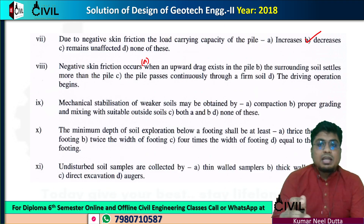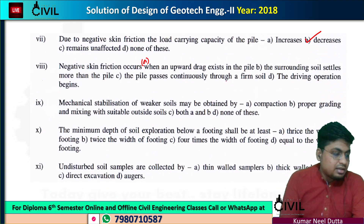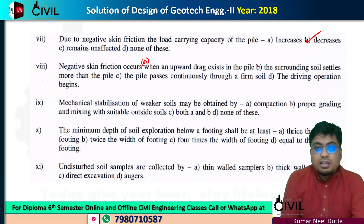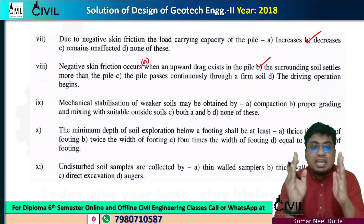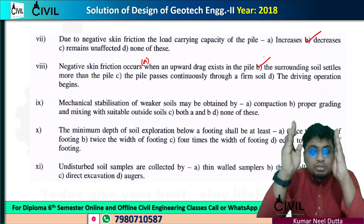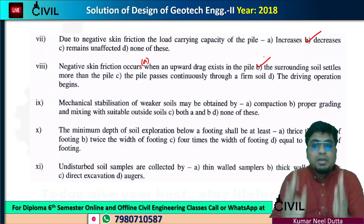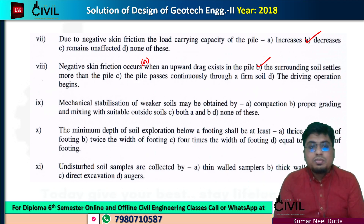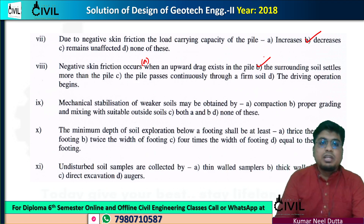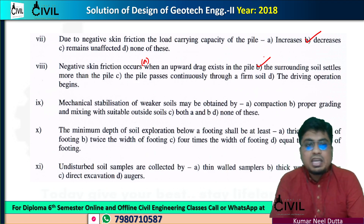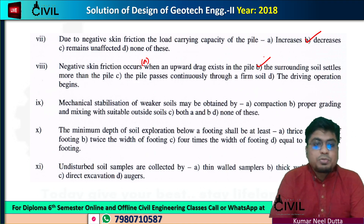Our surrounding soil settles more than the pile. If our pile settles 4 mm and the soil settles more — say 2 or 3 — we go to the pile settlement being less. So option B will be correct.